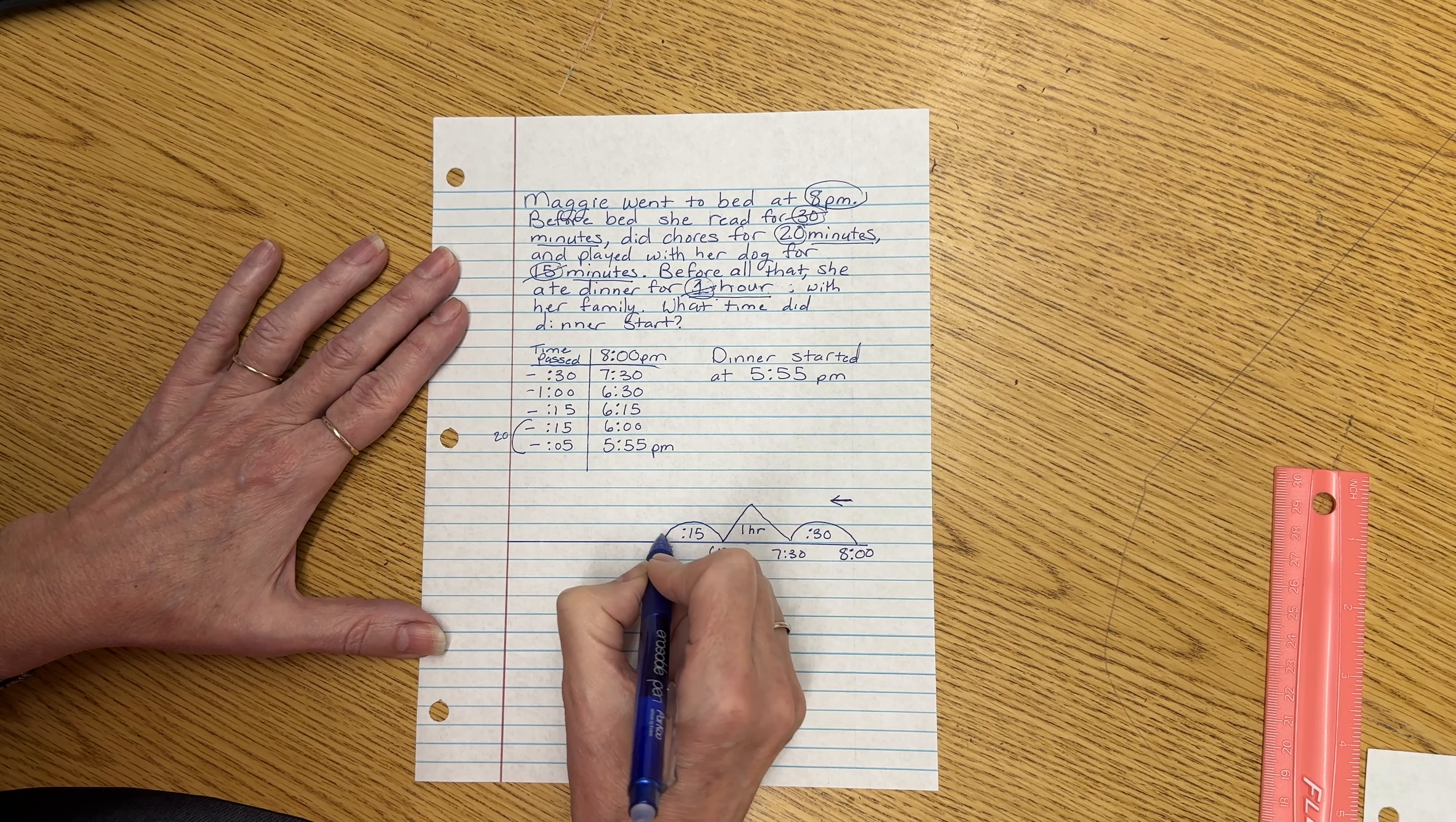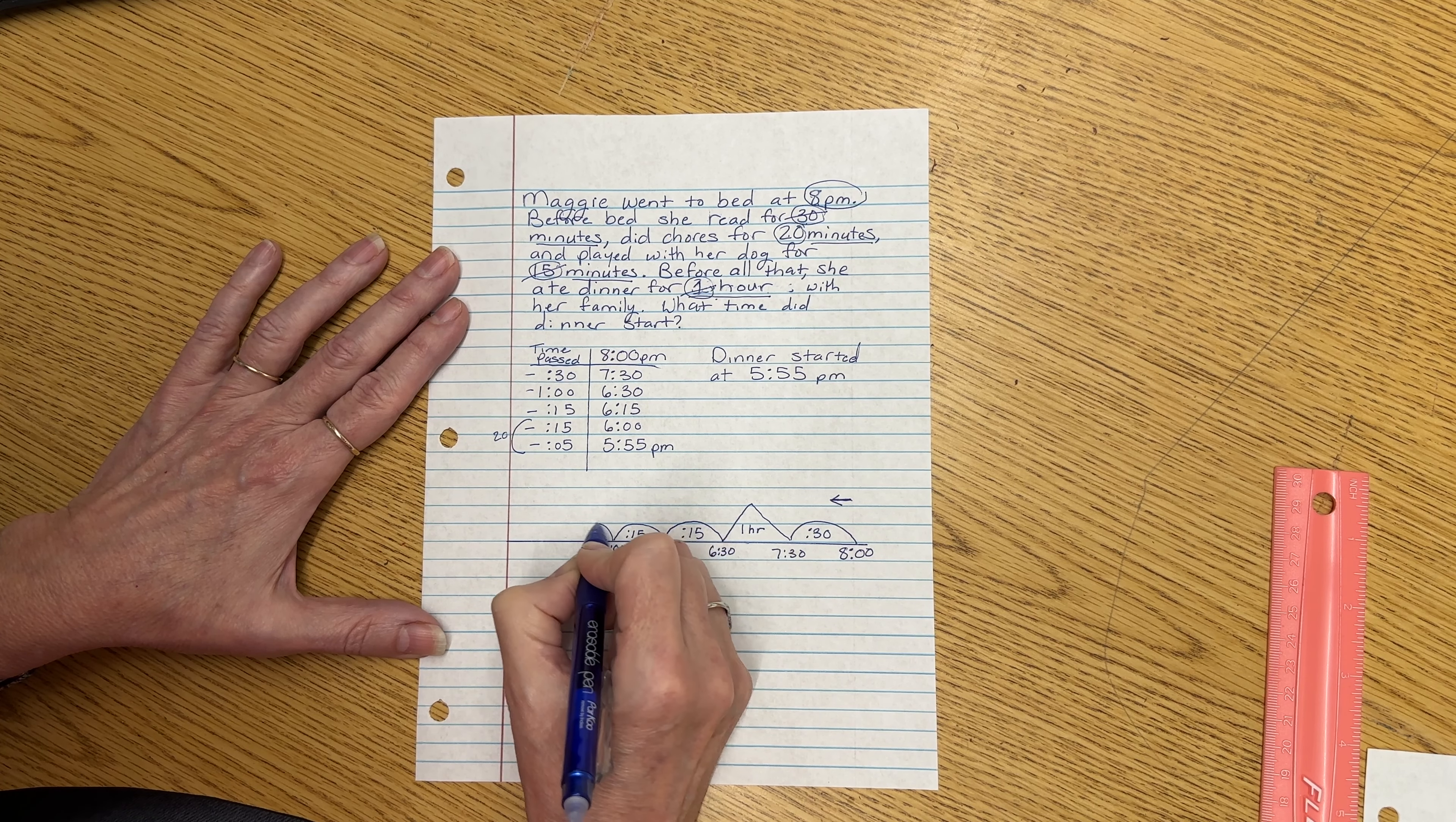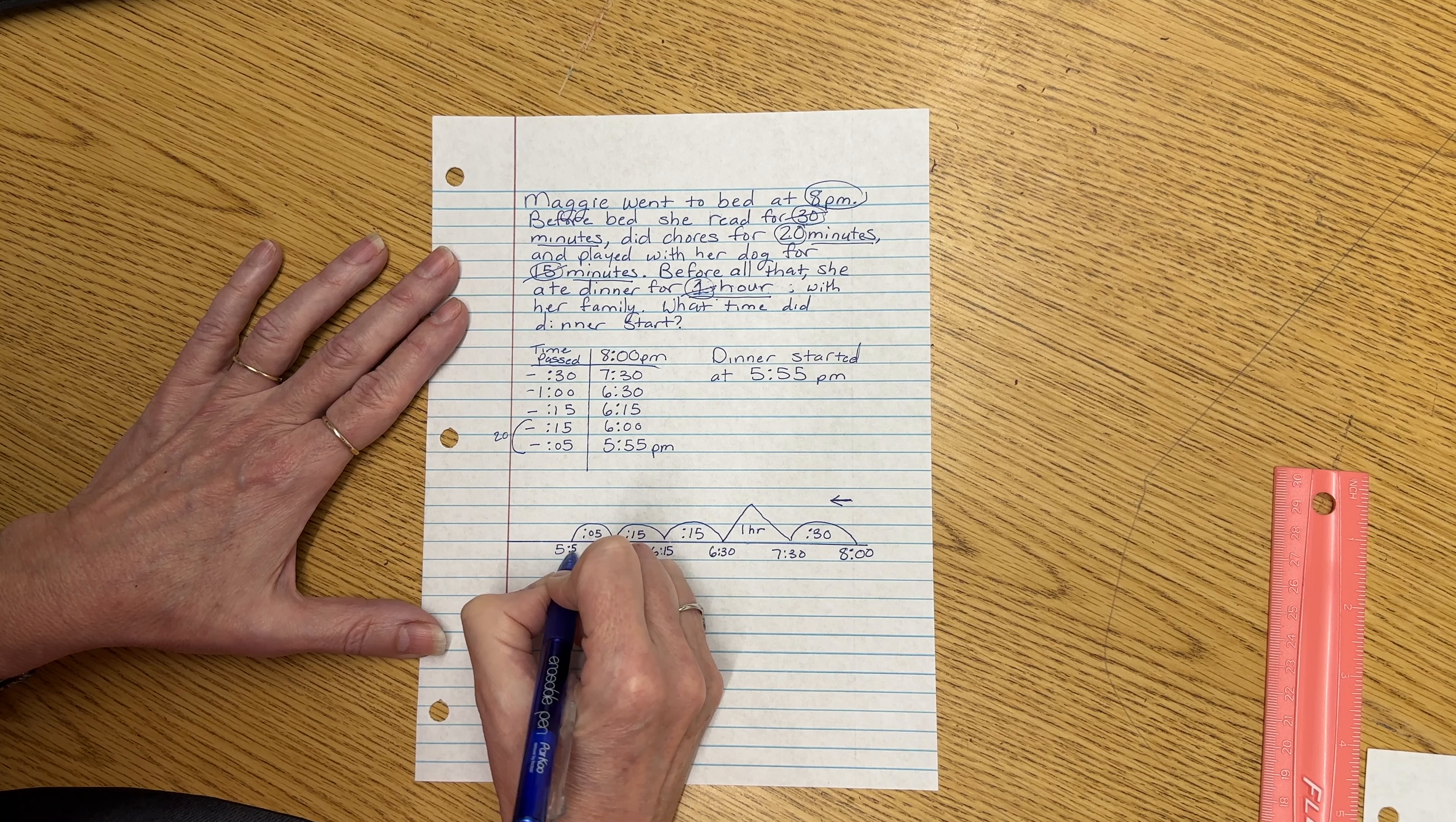And then we're going to break that 20 minutes up into a 15-minute hill, which will get us to 6 o'clock, and a 5-minute hill, which will get us to 5:55.